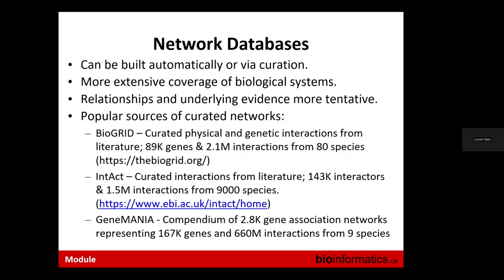Network databases, unlike pathway databases, can be built automatically by taking large published data sets, downloading supplementary files, and digesting them. As a result they have more extensive coverage of biological systems, but the relationships and underlying evidence — for example that two proteins interact — are more tentative because they come from high-throughput, noisy data. There are over 400 network databases; three of the largest are BioGRID, IntAct, and GeneMANIA.